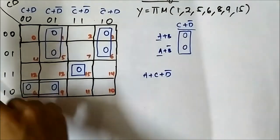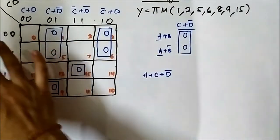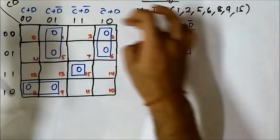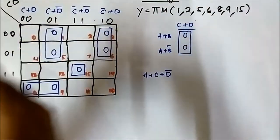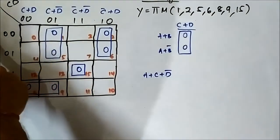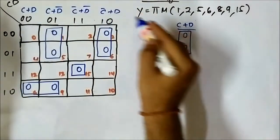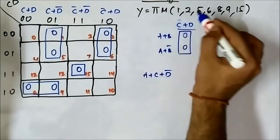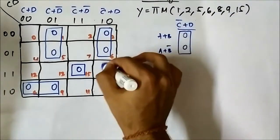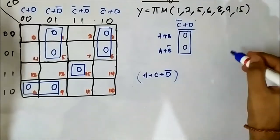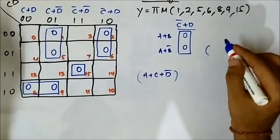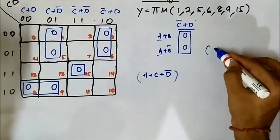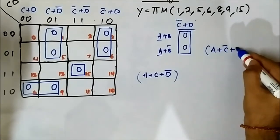Now this pair — the horizontal components are the same as the previous pair, so we will keep it. Only the vertical component will change; here it is C bar or D. For these two pairs, the horizontal components are the same, only the vertical component is changing. So here for this group, A is common in the horizontal side, and in the vertical side we have C bar or D common. So it is A or C bar or D.